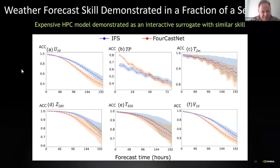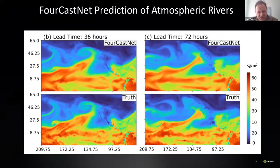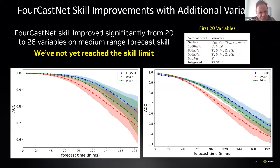FourCastNet is the largest model published to date, starting from the Dubin and Bauer 2018 paper — both are science advisors on Earth-2. We have extensive ACC skill score comparisons against IFS, which is the basis of the ERA5 reanalysis, and all 20 variables do really well. We also show extreme weather event predictions including atmospheric rivers in the publication, with really good skill versus ground truth.